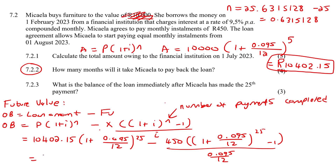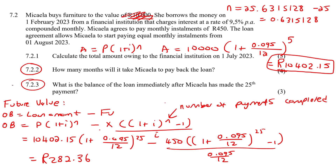Some of you might be thinking: why aren't we taking this answer and compounding it for one more month? That's only if they asked us to calculate the final payment. If they had added a question 7.2.4 asking for the value of the final payment, then you'd realize that this outstanding balance after 25 payments needs to be compounded for one more month using the grade 11 formula. But this question just asks for the outstanding balance immediately after the 25th payment.